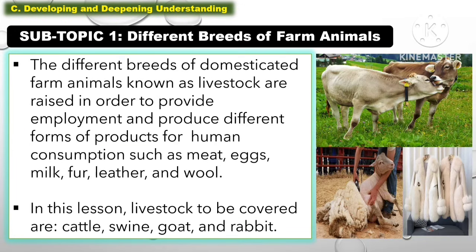The different breeds of domestic farm animals known as livestock are raised in order to provide employment and produce different forms of products for human consumption such as meat, eggs, milk, fur, leather, and wool. In this lesson, livestock to be covered are cattle, swine, goat, and rabbit.